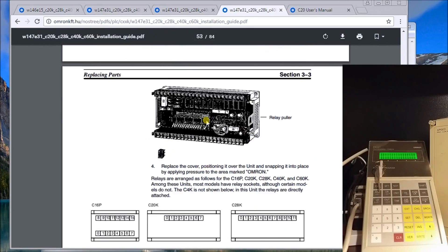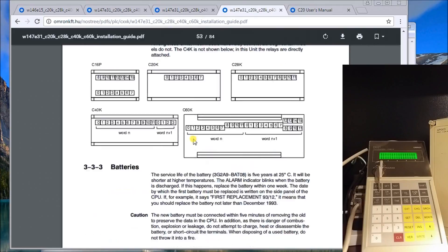Now with the relay units, you can always replace the relay units. There's a little relay puller on the right-hand side. You can just pull them out and replace them at will.